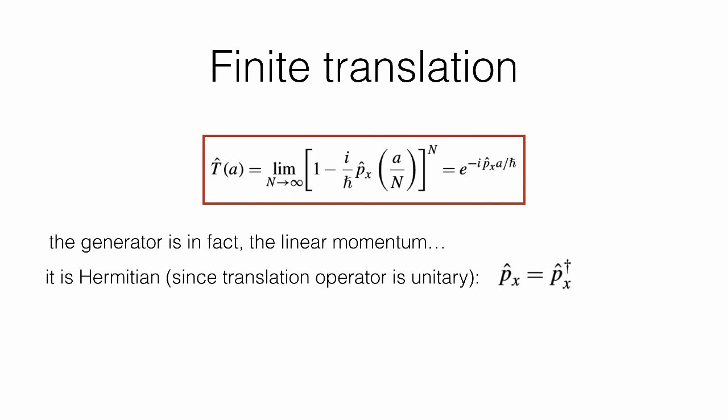A complex exponential with an operator in the argument is not easy to calculate unless we operate it on an eigenstate of p̂x. We've seen this before. If we cannot do that, we use the Taylor series. But instead, we'll work in the basis of the eigenstates of p̂x. Because p̂x is Hermitian — every generator of a unitary operator is Hermitian — we can use the basis of its eigenstates.